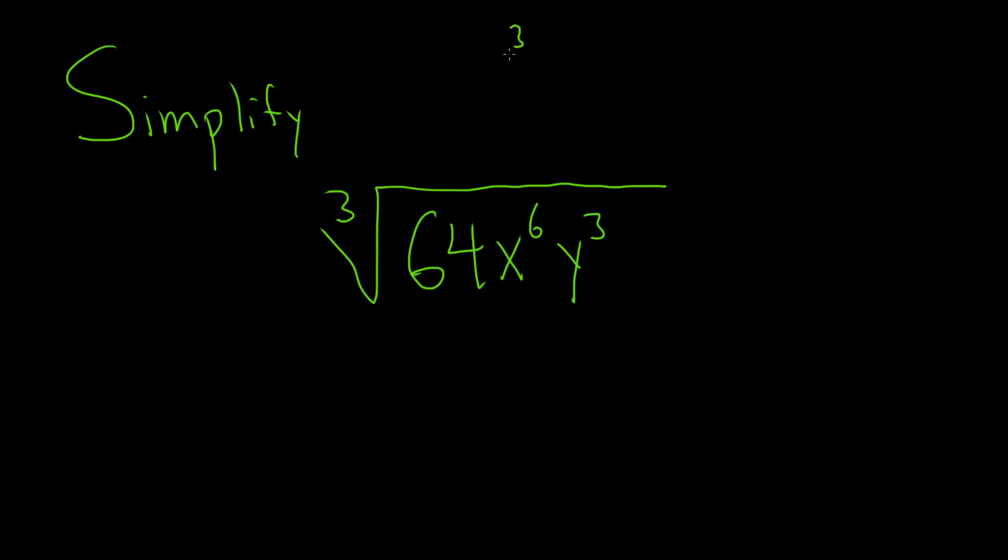So the idea is if we have the cube root of something cubed, which I'll call a, you just get a. It kind of gets rid of the three. So the goal here is to write everything as something to the third power. This is how we'll do it.